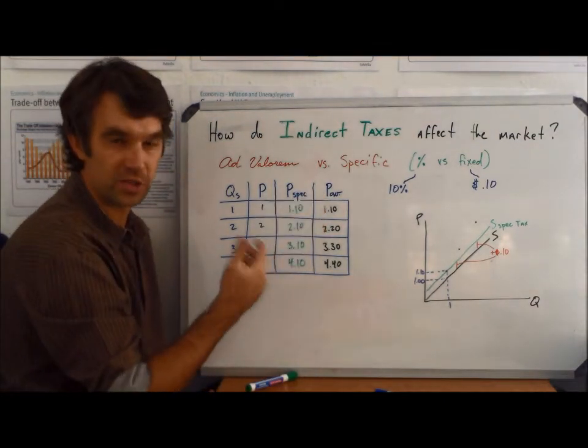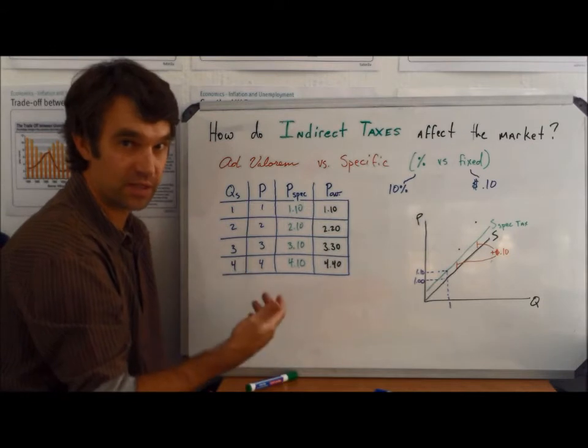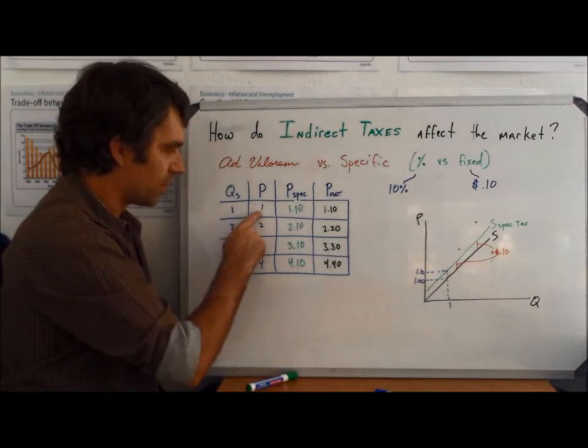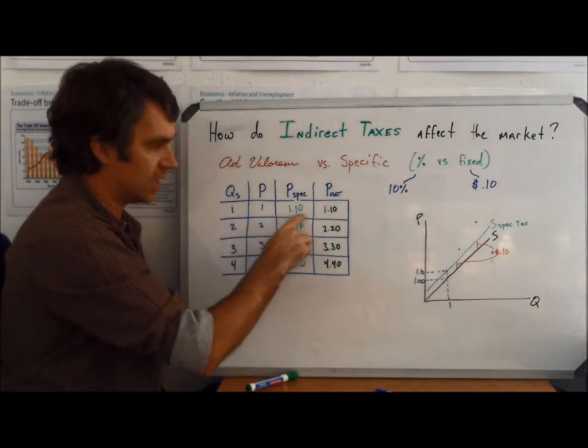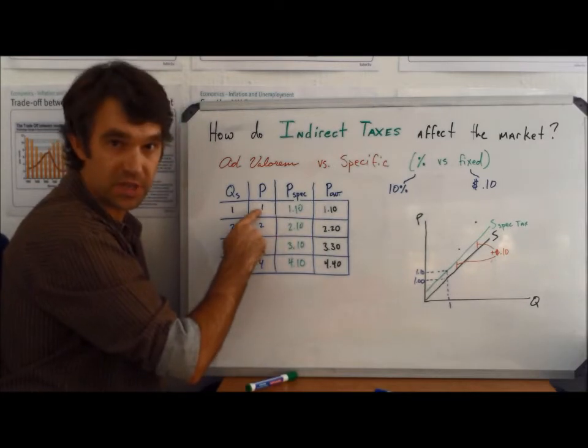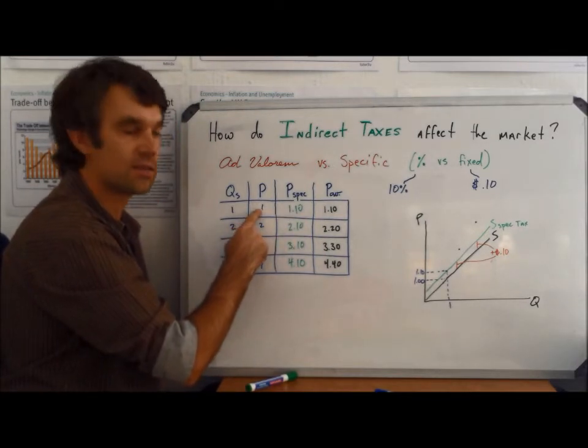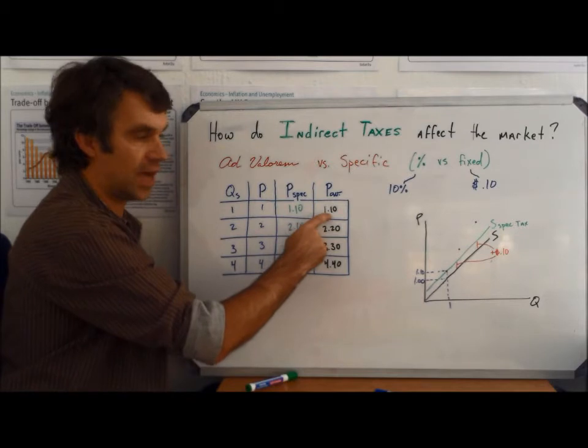With an ad valorem tax, you'll see that it's going to have a different effect. Starting with the price of $1, we see it actually ends up the same here, because 10% of $1 is 10 cents. So the price increases to $1.10.